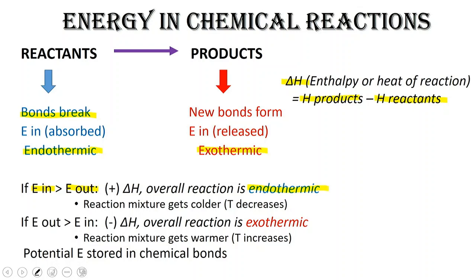Whereas if we have more energy coming out of the system than going into the system, that overall reaction is going to be exothermic. If you put your hand on this type of reaction, it feels hot. Those particles undergoing the chemical reaction are releasing energy to the surroundings — to the solvent, the test tube, the air, and ultimately your hand. You feel warmth because that energy is being released. This energy comes from the potential energy stored in the chemical bonds.